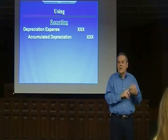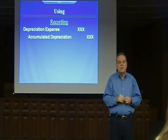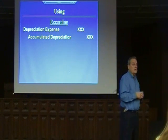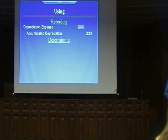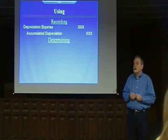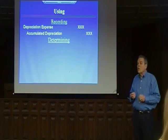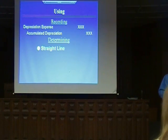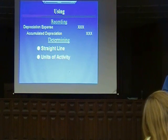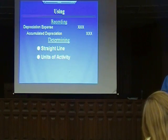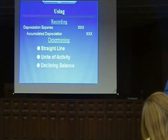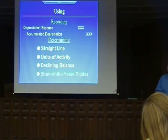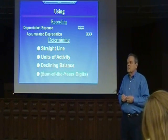We've been making that entry since chapters three and four, but each time we've been told the amount. It is our job now to determine the amount of that entry. There are four possible ways to do that — four acceptable depreciation methods: straight line, units of activity, declining balance, and sum of the year's digits.